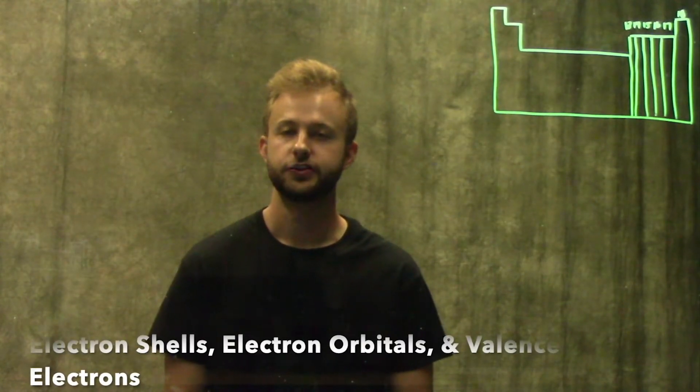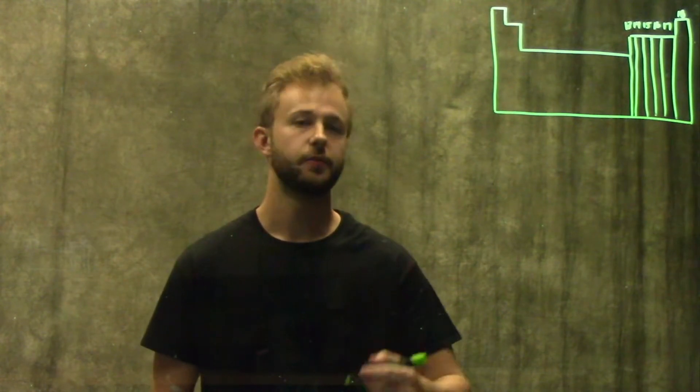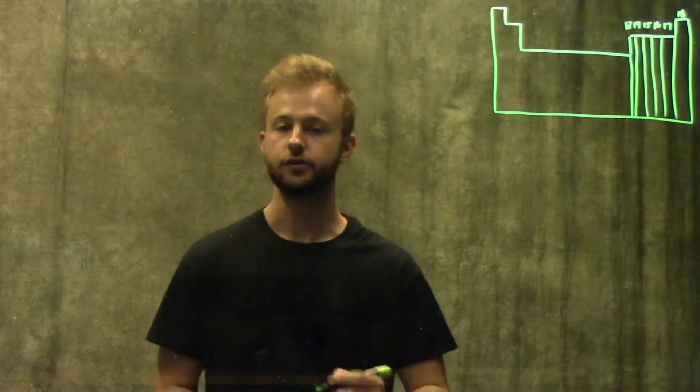This video is going to be about electron shells, electron orbitals, and valence electrons. We're going to start out by drawing the Bohr model of a neutral carbon atom.